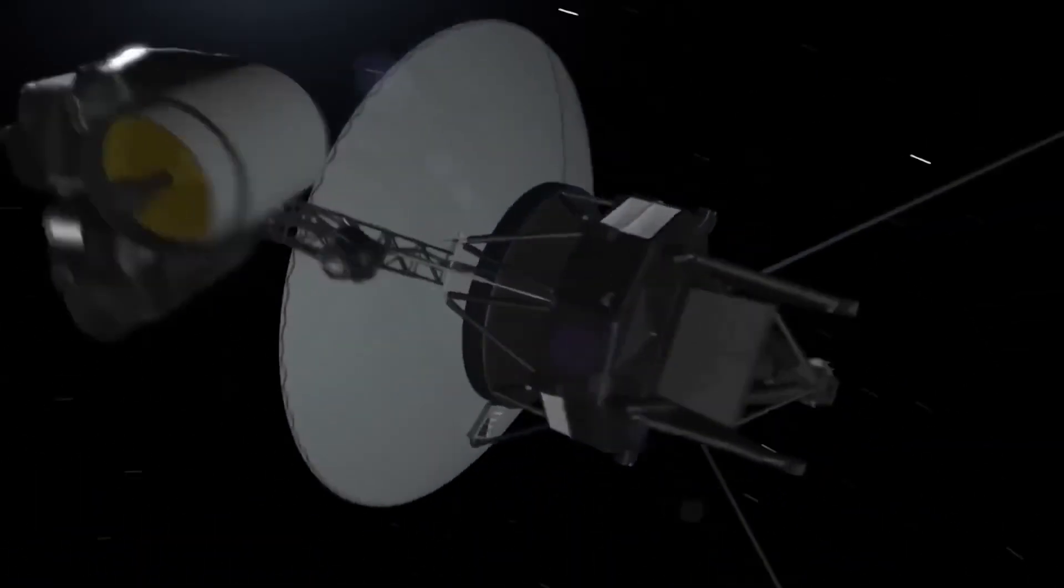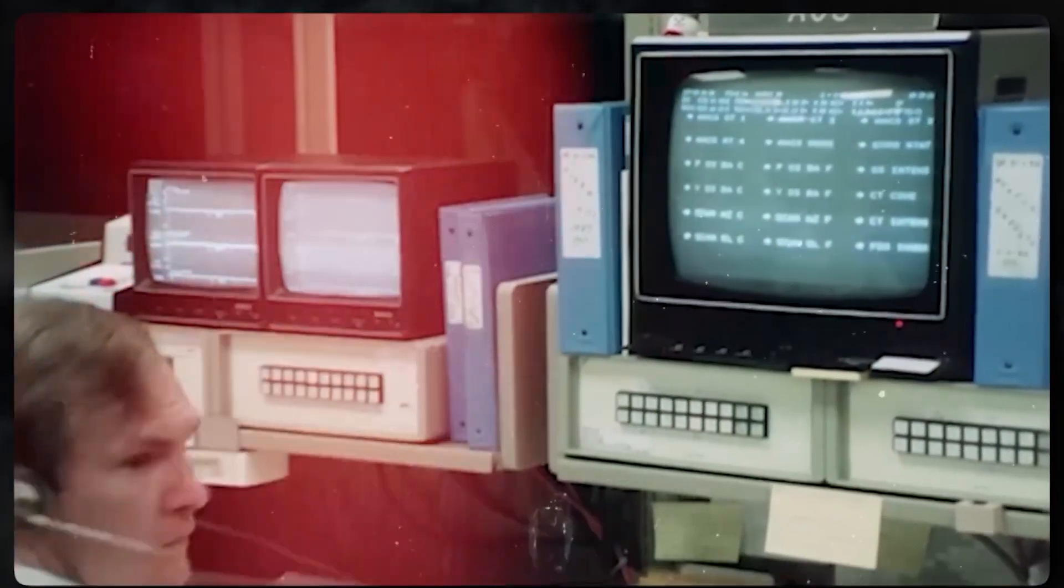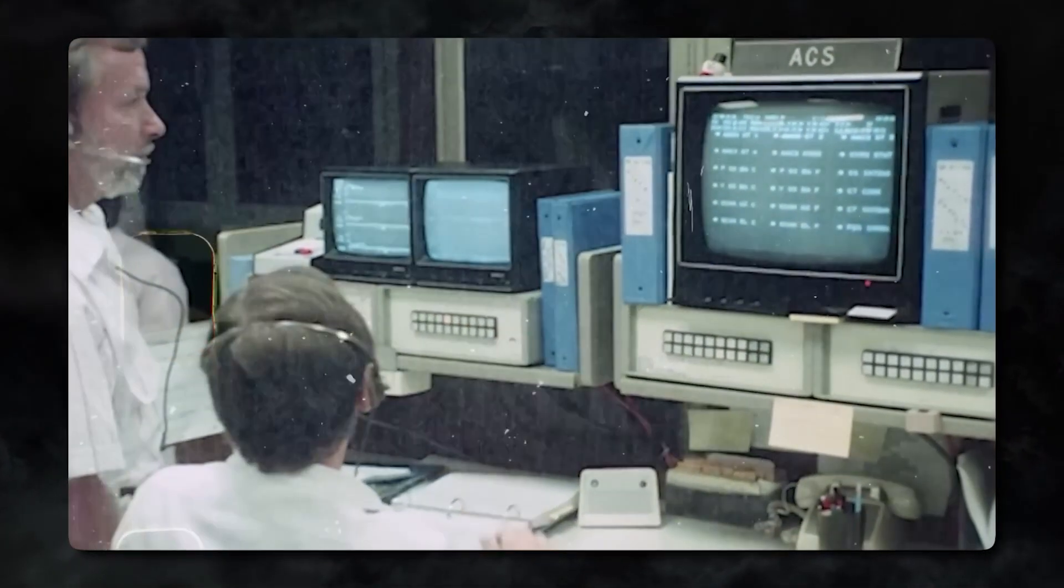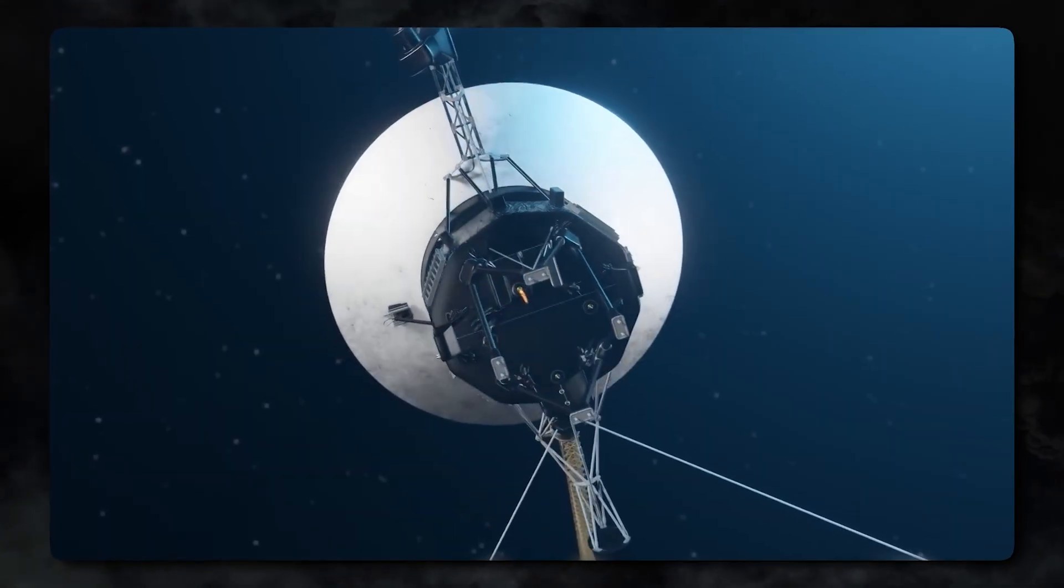Third, Voyager 1's continuous monitoring of interstellar space during this period provided data about the baseline conditions independent of the comet. This helps scientists better understand the natural variability of interstellar space, which is still a relatively unknown environment.